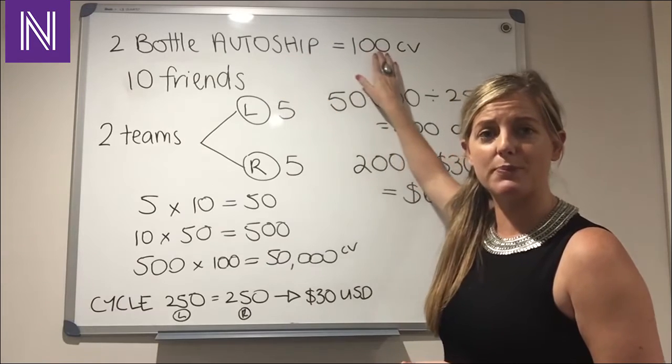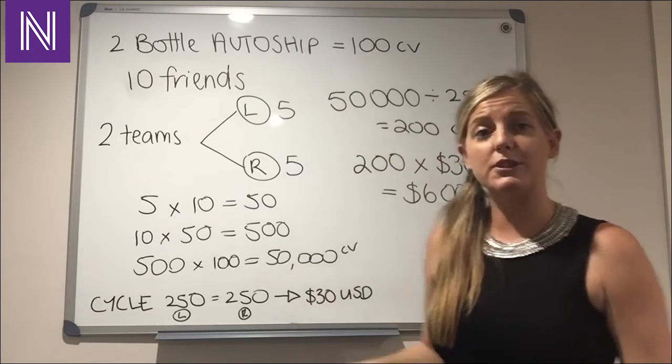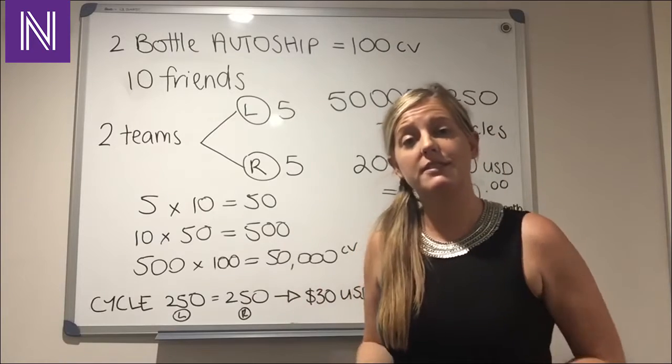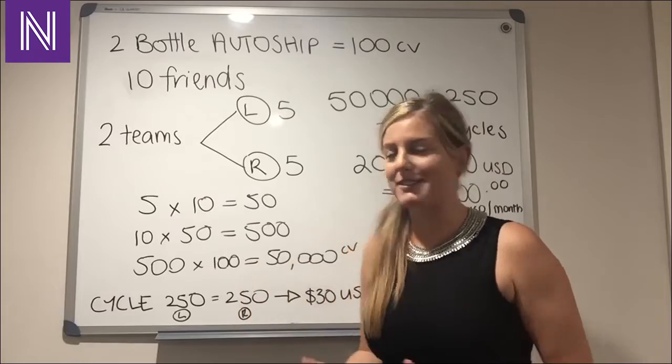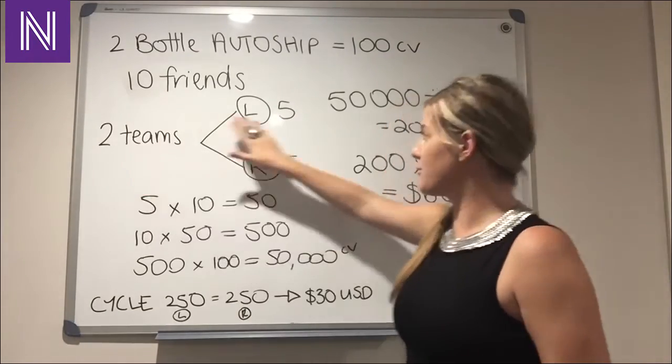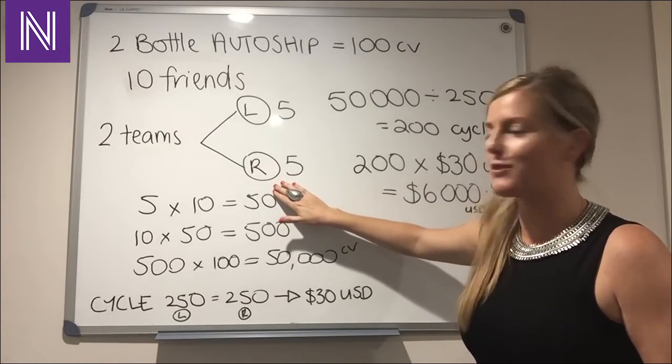Now a two bottle autoship is 100 CV points. I'm just going to call it points. Now what we do, we start off, we find 10 friends that we want to help with their skin and then we're going to help them help 10 friends. So we have two teams. We're going to put five of our friends on the left and five of our friends on the right.